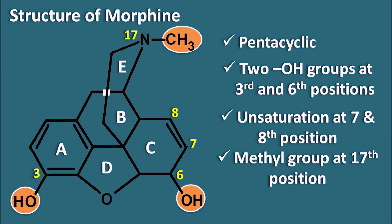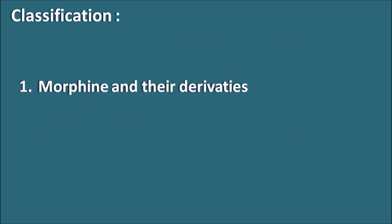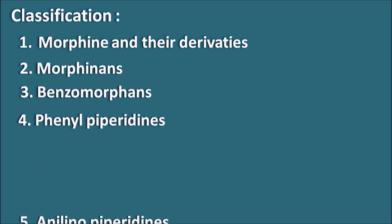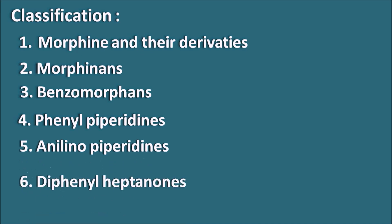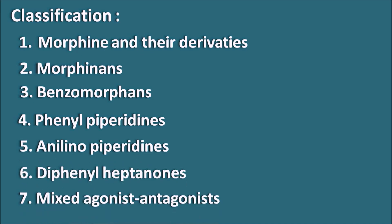Now let us go one by one through the derivatives of morphine and other ring systems. In the classification, we include many categories: morphine and their derivatives, morphinans, benzomorphans, phenylpiperidines, anilinopiperidines, diphenylheptanones, mixed agonist-antagonists, and full antagonists.